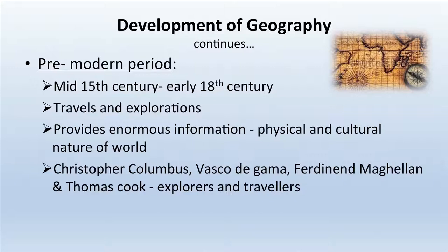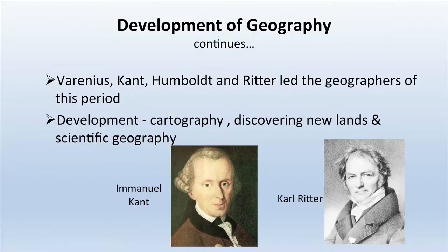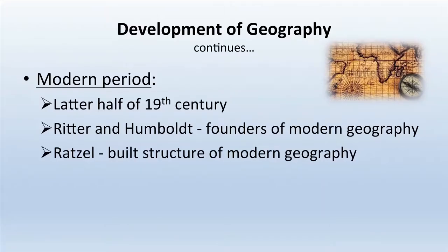During the pre-modern period, lots of travels and explorations provided enormous information about the physical and cultural nature of the world. Famous explorers included Christopher Columbus, Vasco da Gama, Ferdinand Magellan, and Thomas Cook. Geographers of this period included Varenius, Kant, Humboldt, and Ritter. Development focused on cartography, discovering new lands, and scientific geography. Ritter and Humboldt are considered the founders of modern geography.